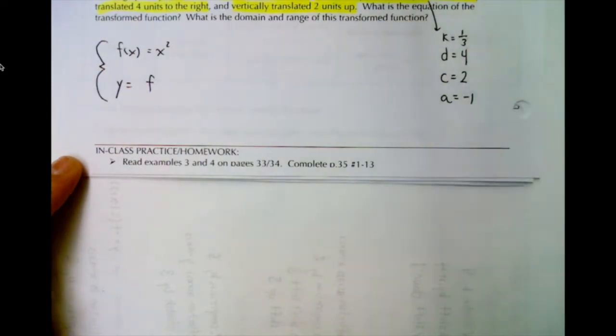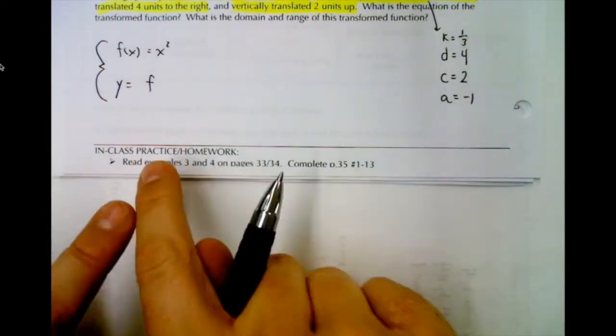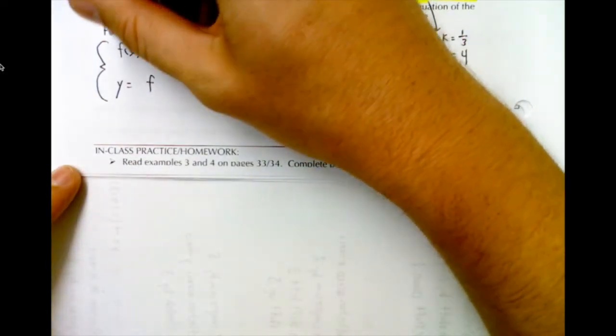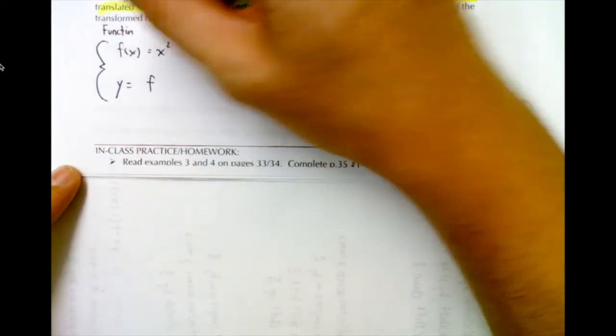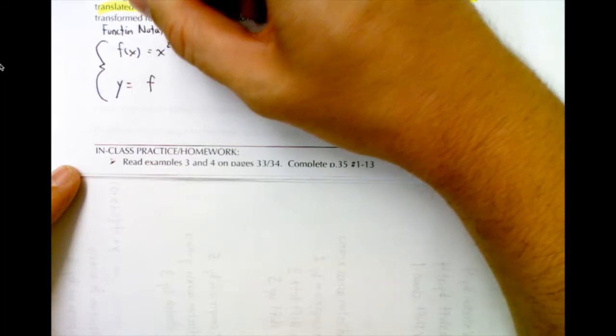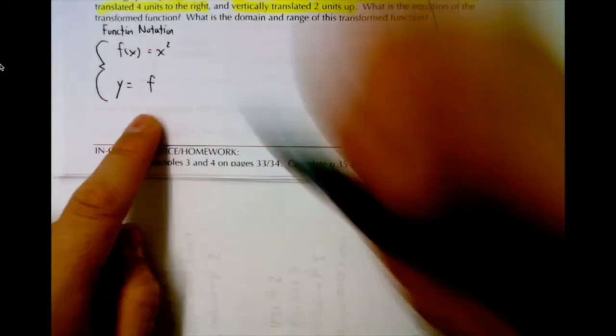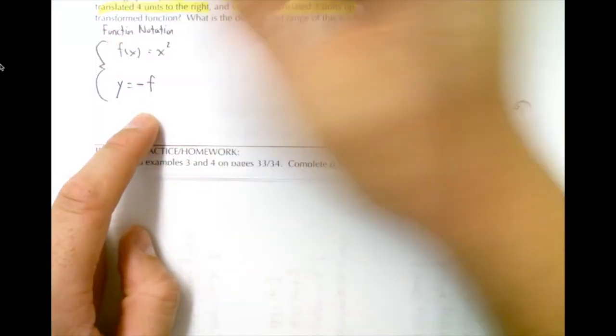So to keep filling in our function notation equation, I'm going to label it here function notation. We can place a in front of f, so a is negative one, so we have negative f.